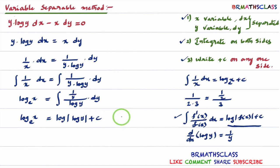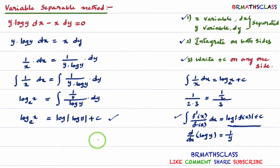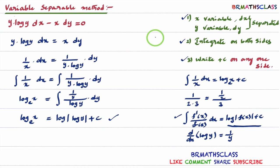Further simplification is also possible. But to avoid confusion, I will stop here. In this variable separable method, please avoid textbook answers, because from person to person the answer varies — it only looks different but actually gives the same meaning. If you want to avoid confusion in this method, avoid textbook answers. I hope you understood this class.